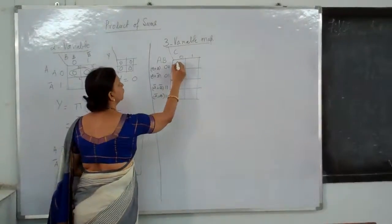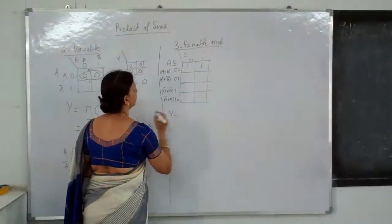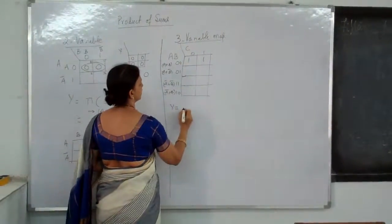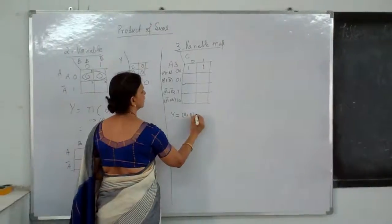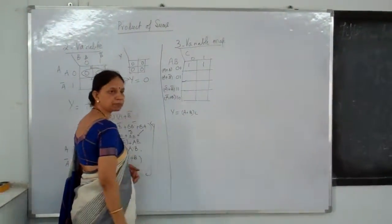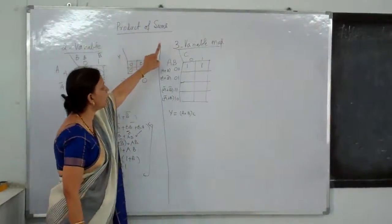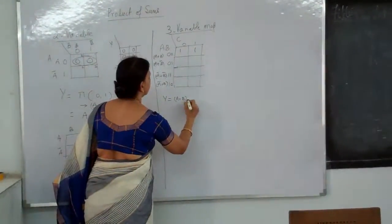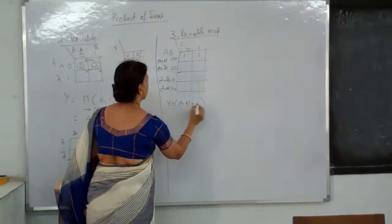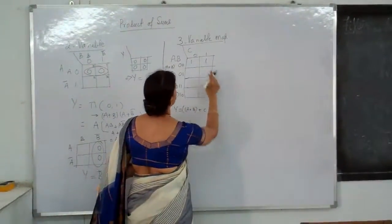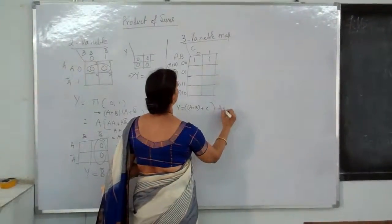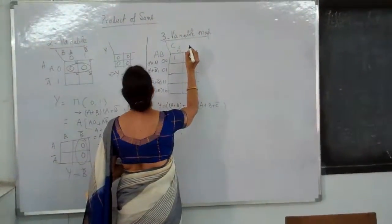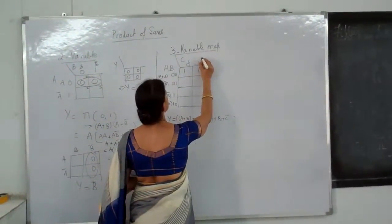So once again, if you take these two — what is your Y equal to? What are the two products? Here you write it as (A + B)·C. It is Product of Sums — this is one sum. So it becomes (A + B + C)·(A + B + C-bar).